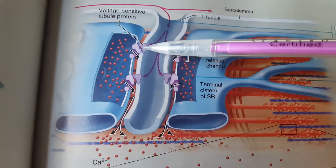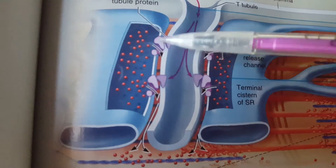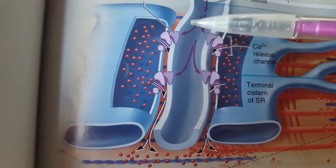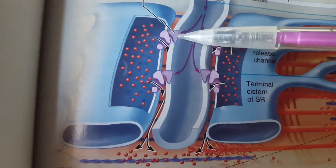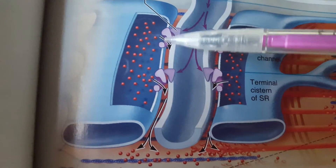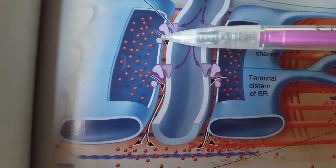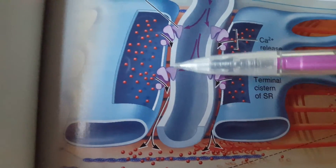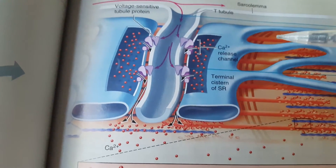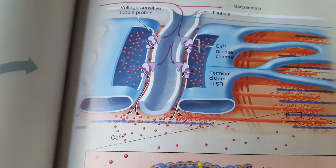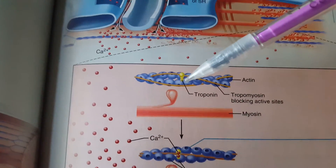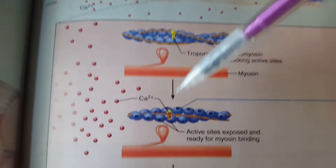These voltage-sensitive proteins in the transverse tubule are also communicating directly with protein channels in the terminal cisterna. When the voltage-sensitive protein changes shape because of the voltage, that shape change mechanically changes the shape of this channel, opening it up to release calcium into the sarcoplasm.